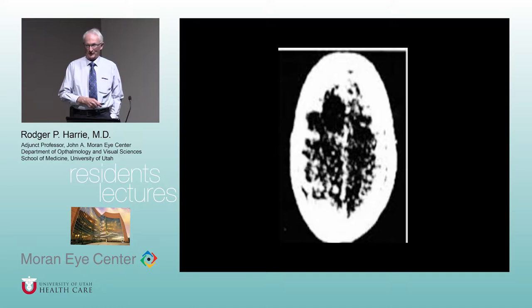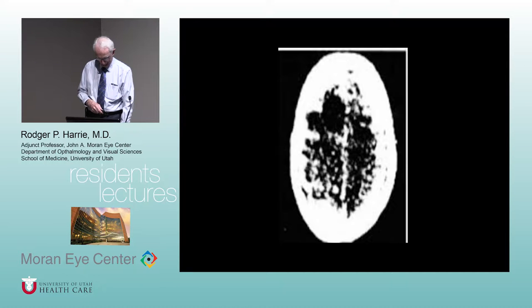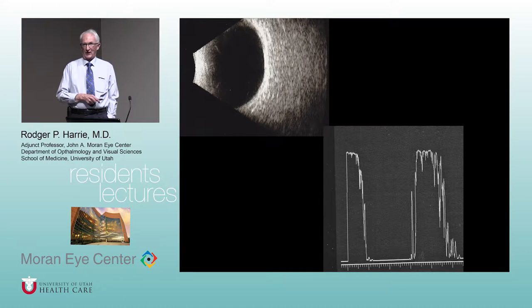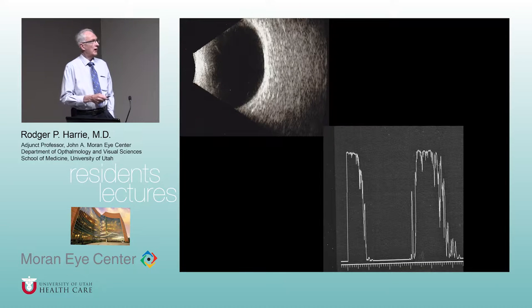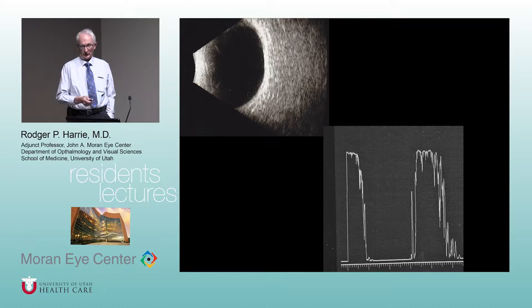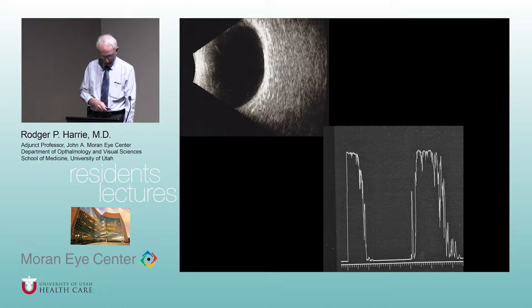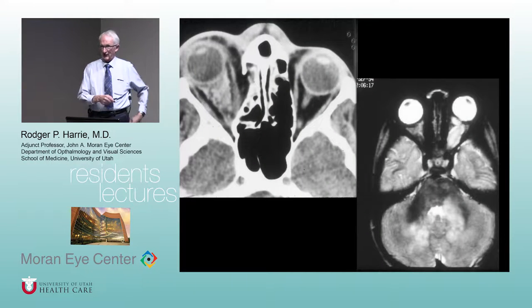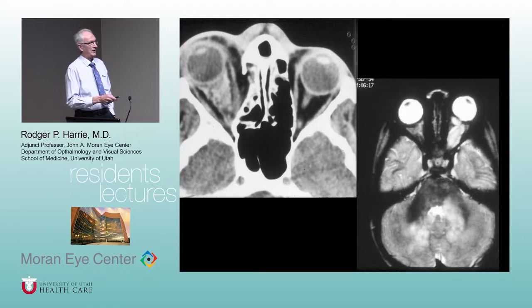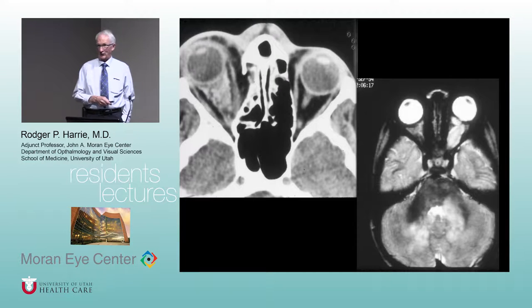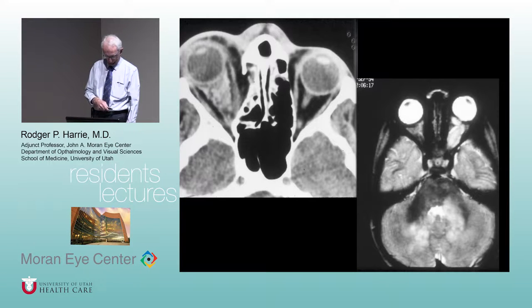Early generation CT scans were better than x-rays but still really hard to tell detail — just not that refined. Ultrasound at that time was kind of a standard of care, certainly for the globe but also for the orbit. It was really the best we had to look at orbital soft tissue, especially the anterior two-thirds. But then modern generation CT and MRI scanning came along — the detail is incredible: muscles, nerves, everything. So who needs ultrasound, especially for the orbit? But there still is a place for it.